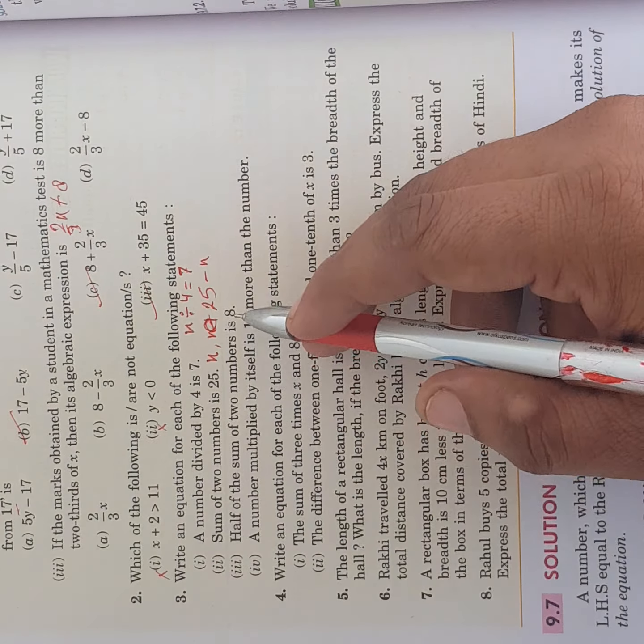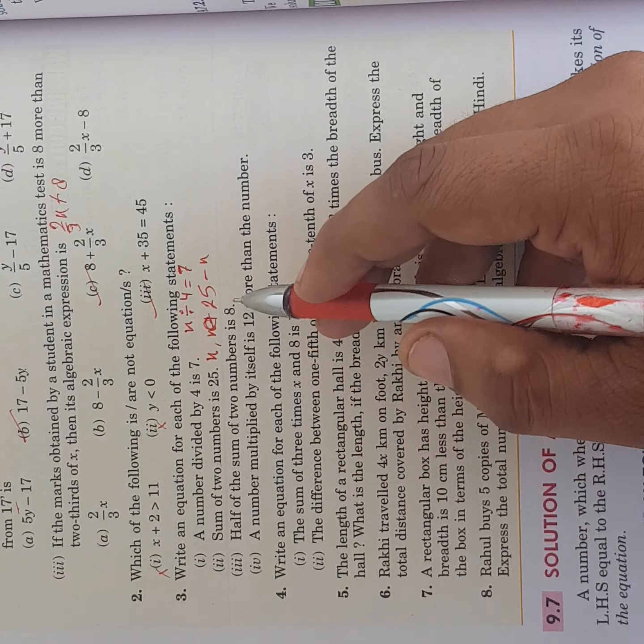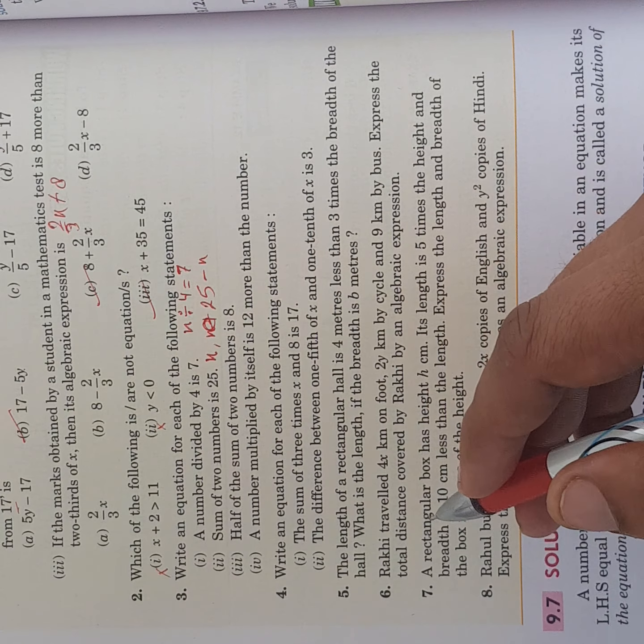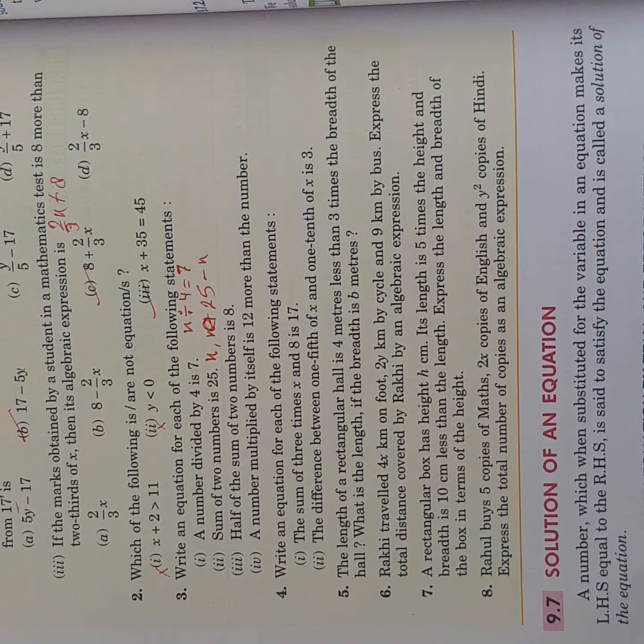Half of sum of 2 numbers is 8. Half of sum of 2 numbers is 8. 2 numbers are there, their sum half, if we take half of it then how much will it be, it will be 8, right?